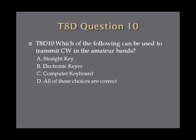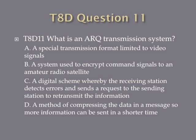Question 10: Which of the following can be used to transmit CW in the amateur bands? A. Straight Key. B. Electronic Keyer. C. Computer Keyboard. Or D. All of these choices are correct. Question 11: What is an ARQ Transmission System? A. A Special Transmission Format limited to video signals. B. A system used to encrypt command signals to an amateur radio satellite. C. A digital scheme whereby the receiving station detects errors and sends a request to the sending station to retransmit the information. Or D. A method of compressing the data in a message so more information can be sent in a shorter time.